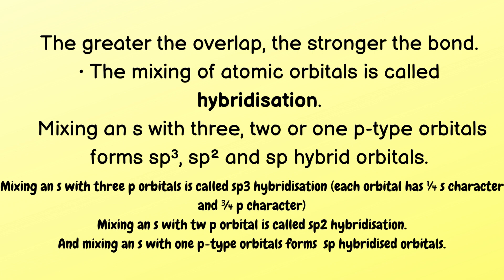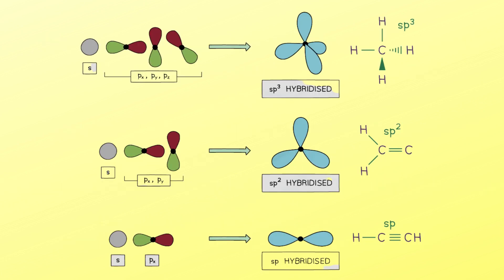In sp³ hybridization, each orbital has one-quarter s character and three-quarters p character. Mixing an s orbital with two p orbitals is called sp² hybridization. As shown, one s orbital combining with three p orbitals gives sp³, which forms single bonds. One s and two p orbitals form sp², which is associated with double bonds. sp hybridization is associated with triple bonds.